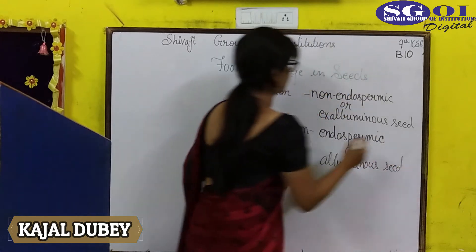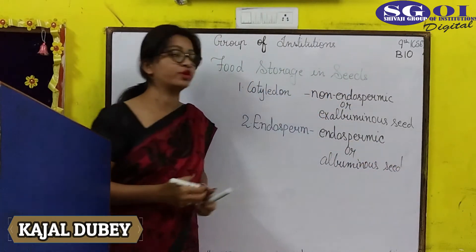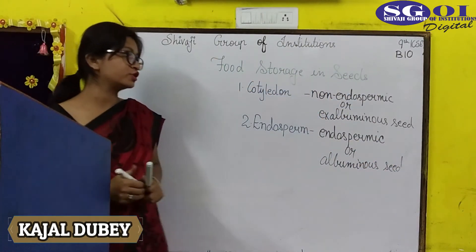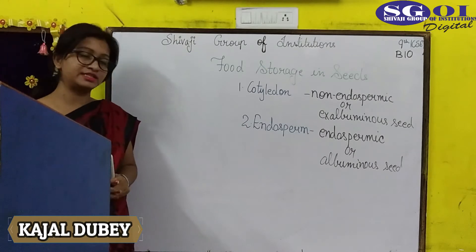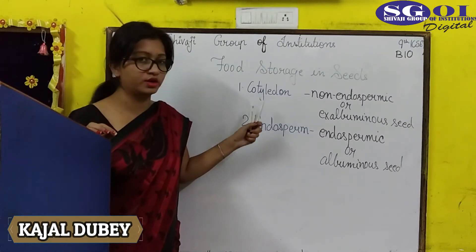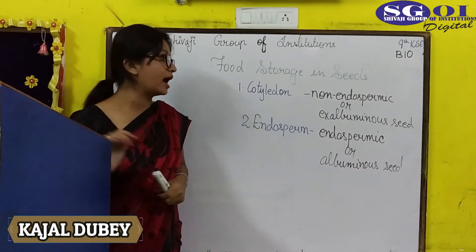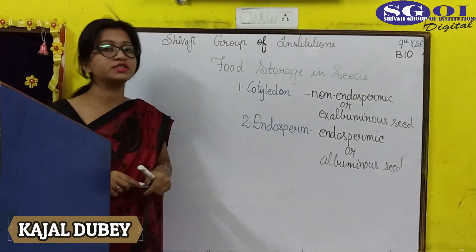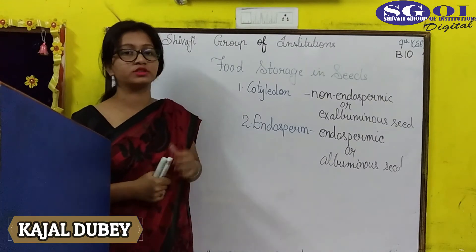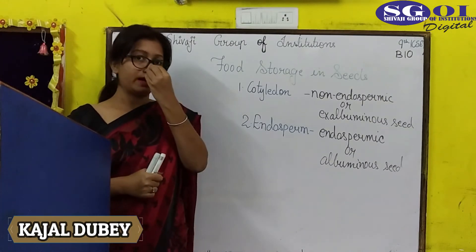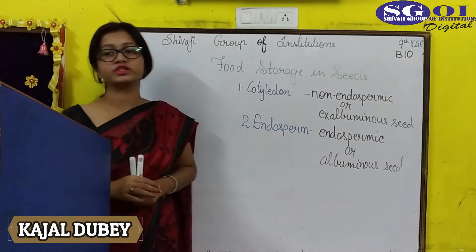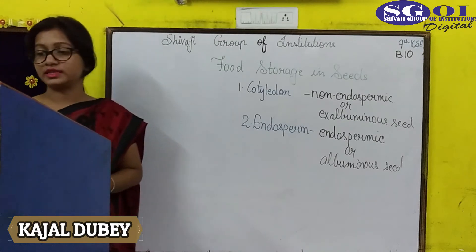So, on the basis of storage of food, seeds are of two types: non-endospermic or ex-albuminous, in which food is stored in the cotyledon; and endospermic or albuminous, in which food is stored in the endosperm. That is all about food storage in seeds.